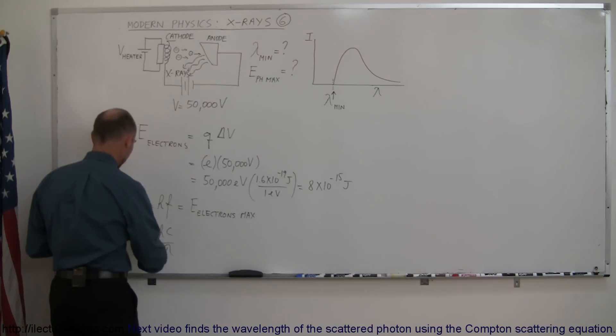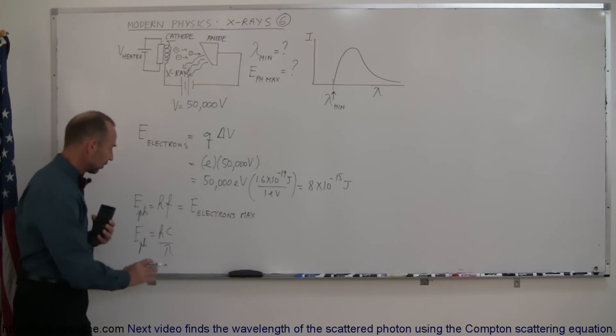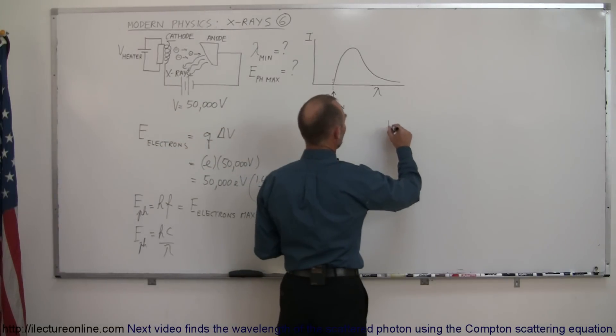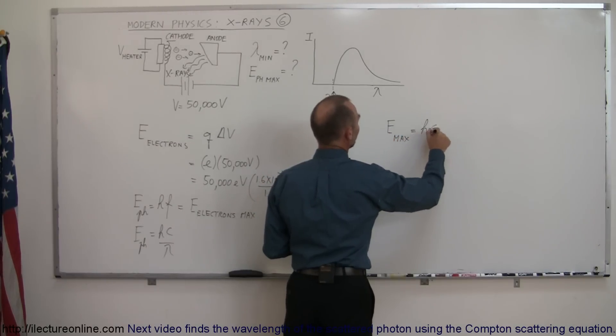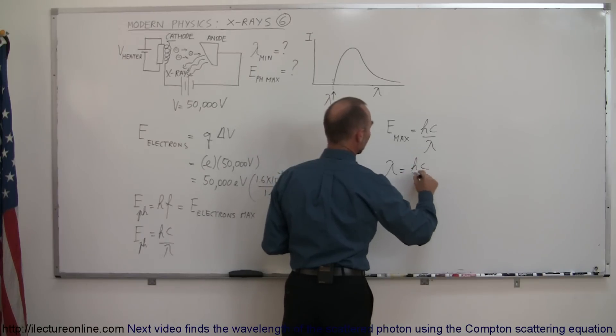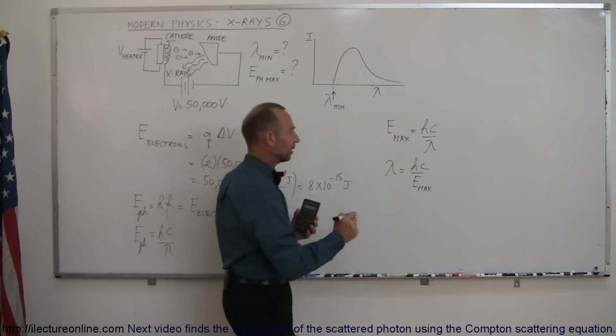So taking that equation down over here. The maximum energy of the photon is equal to the maximum energy of electrons which is equal to HC over lambda. Which means that lambda is equal to HC over E max. And of course that will give us the minimum wavelength. Because the shorter the wavelength the greater the energy.